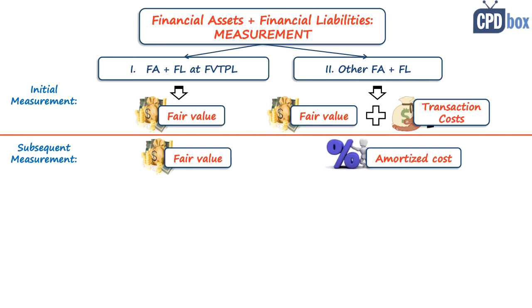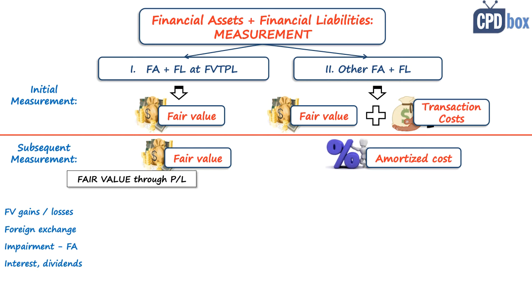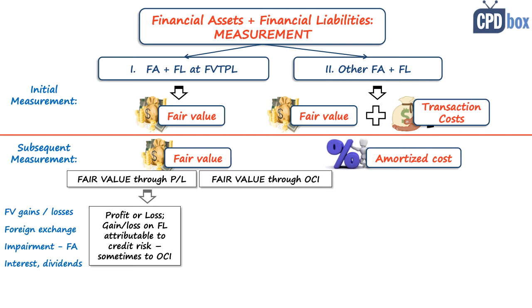How do we recognize the changes resulting from subsequent measurement? Again, it depends on the class of financial instrument and the type of change. Financial instruments at fair value can be split into two subcategories: fair value through profit or loss, and fair value through other comprehensive income. All changes in fair value related to financial instruments at fair value through profit or loss shall be recognized in profit or loss. One small exception: gains or losses on most non-derivative financial liabilities in this category attributable to changes in credit risk should be recognized in other comprehensive income.